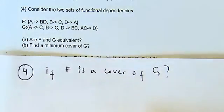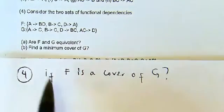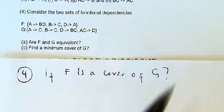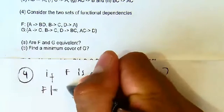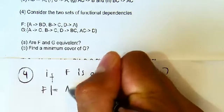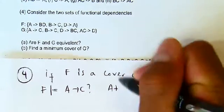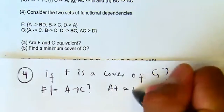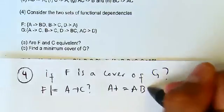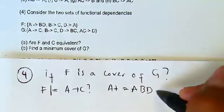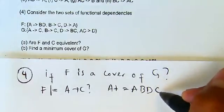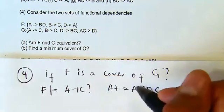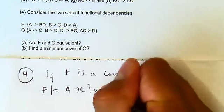The first functional dependency of G is A→C. We check if F can logically imply A→C by computing A+ using the elements of F. Starting with A, we get A, then A→BD gives us B and D. Then from B we get C. Since C is a subset of A+, the answer is yes.